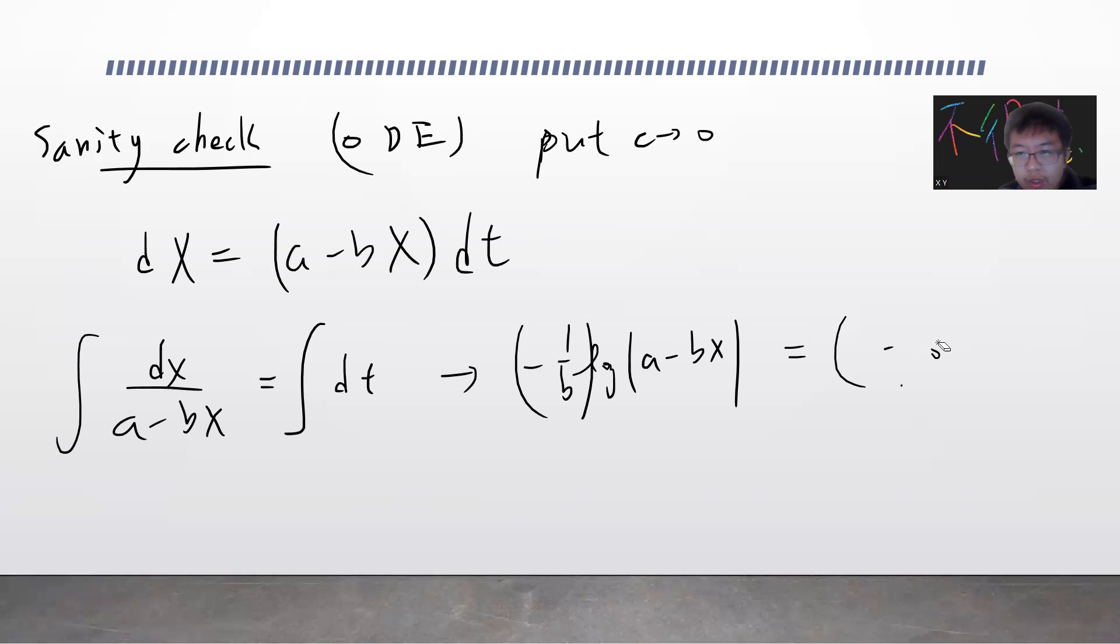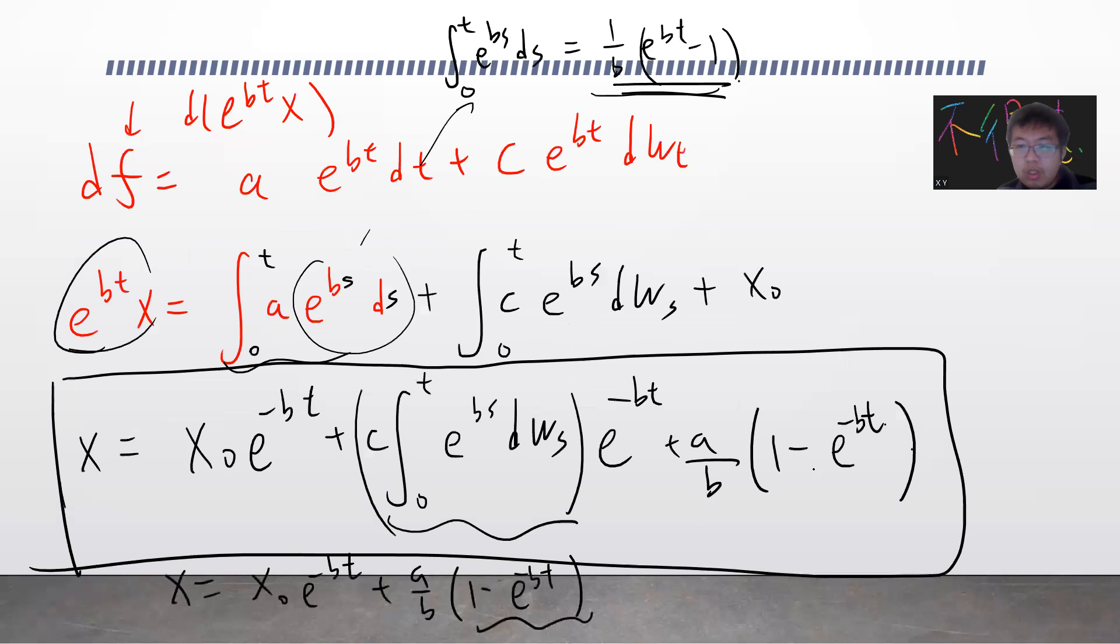Let's say we add some constant term called c̄. Then you can just write down your calculation - multiply by b here, move it, and you'll get exactly the same expression as here, forgetting about the stochastic term.